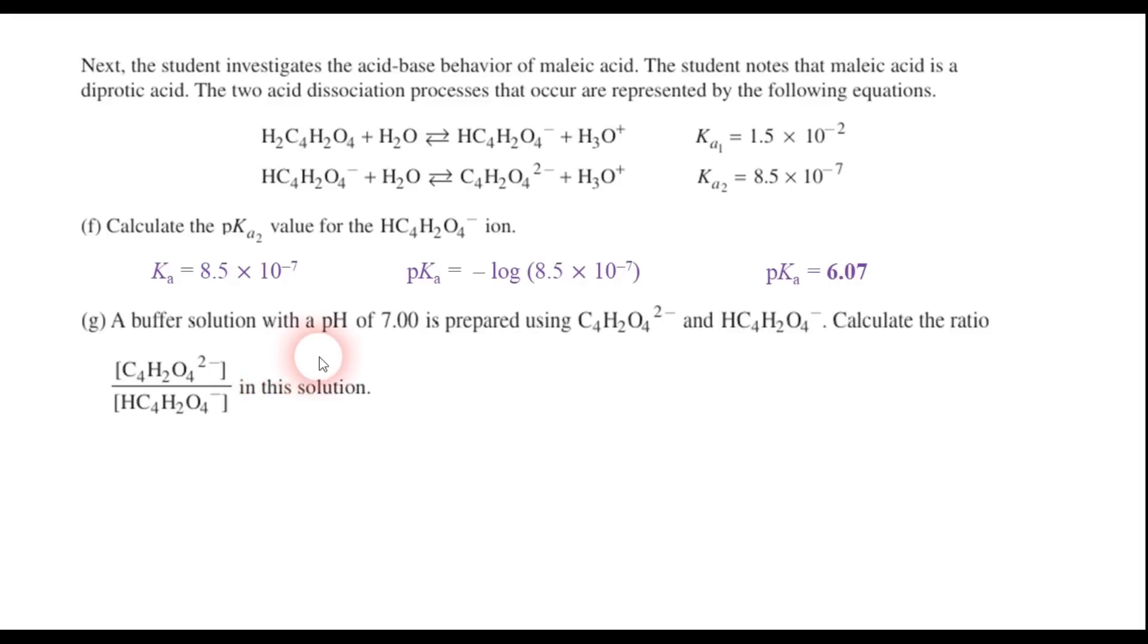Now part G, we have a buffer solution with a pH of 7.00. It's prepared using those two ions here. It says to calculate the ratio of the conjugate base to the conjugate acid in that solution. Well, this looks like a good case for the Henderson-Hasselbalch equation. So yes, Henderson-Hasselbalch equation to the rescue here. So the pH is 7.00. And the pKa we just said was 6.07. And we're going to find the ratio. So we're just going to plug and chug. When you subtract, we get 0.93 equals the log of the conjugate base over the acid. And when you take the antilog, we find that the ratio is about 8.5. So that's your answer to part G.